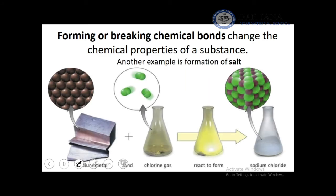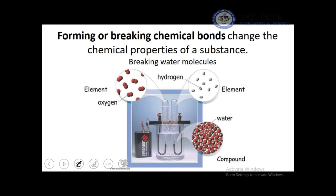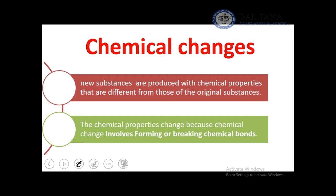Another example is the formation of table salt, NaCl, which forms through a reaction between chlorine gas and sodium metal. Similarly, water is formed by a chemical reaction between hydrogen gas and oxygen gas. A chemical change is a change between two different substances that makes a new substance with different properties.